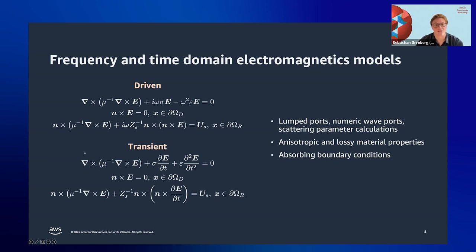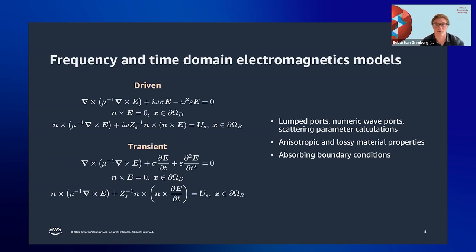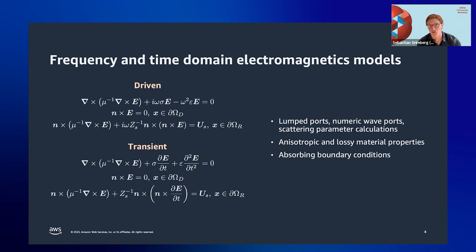In the time domain case, we reuse a lot of the spatial discretization, formulated as a second-order ODE in time. We discretize using a fully implicit scheme for unconditionally stable time stepping — important because the time step limitations for the fine mesh resolutions we need are very small. The same classes of boundary conditions and excitations apply in the time domain.